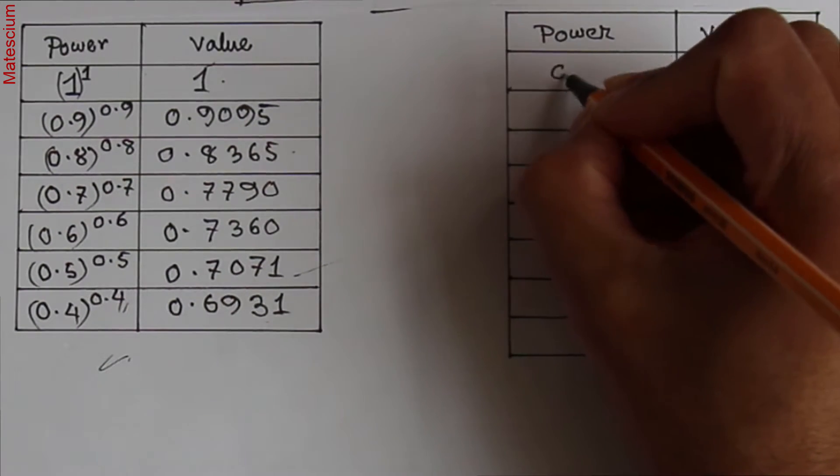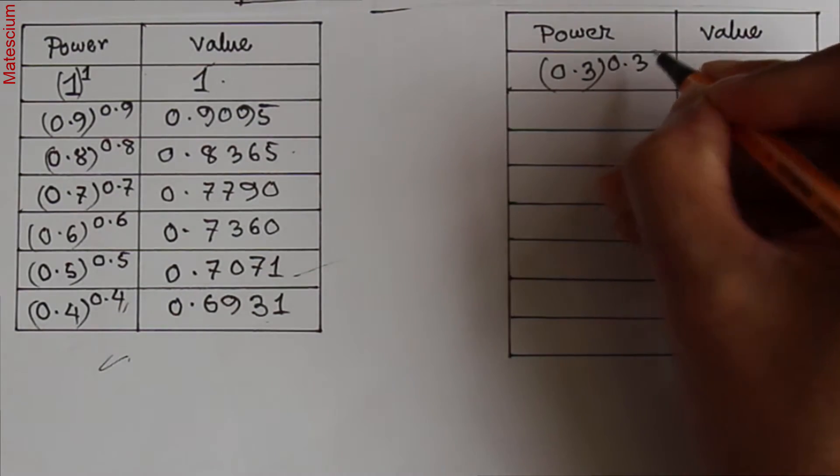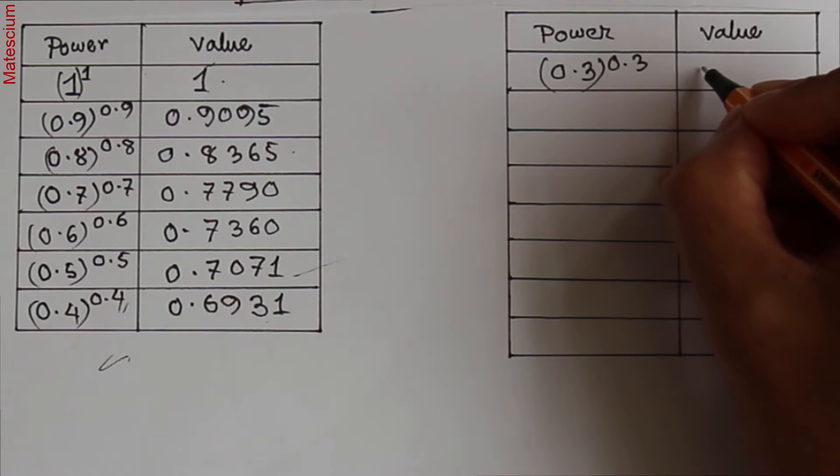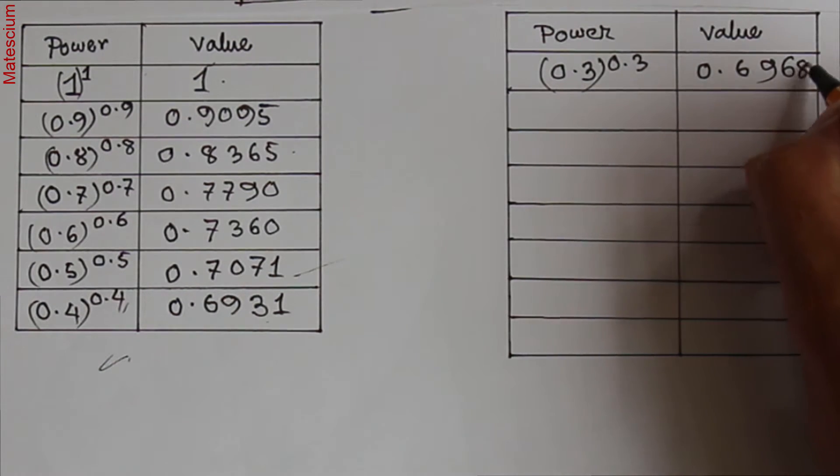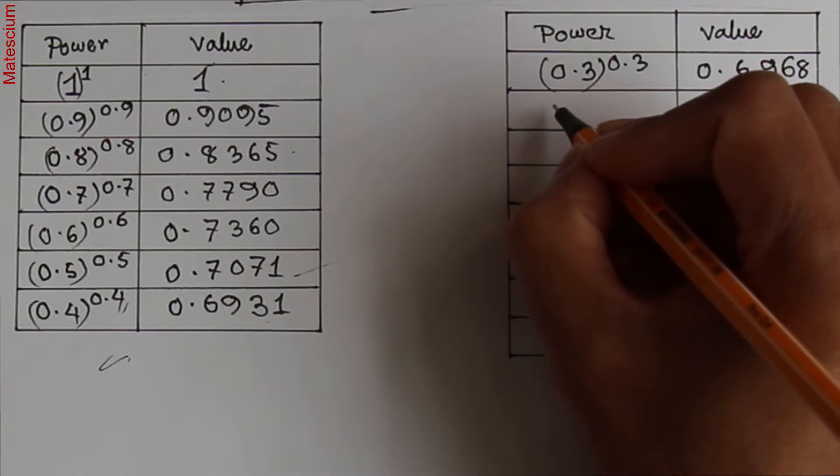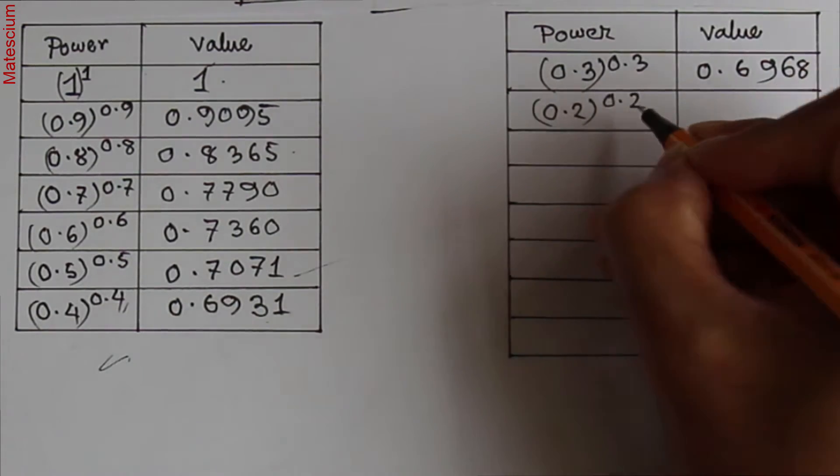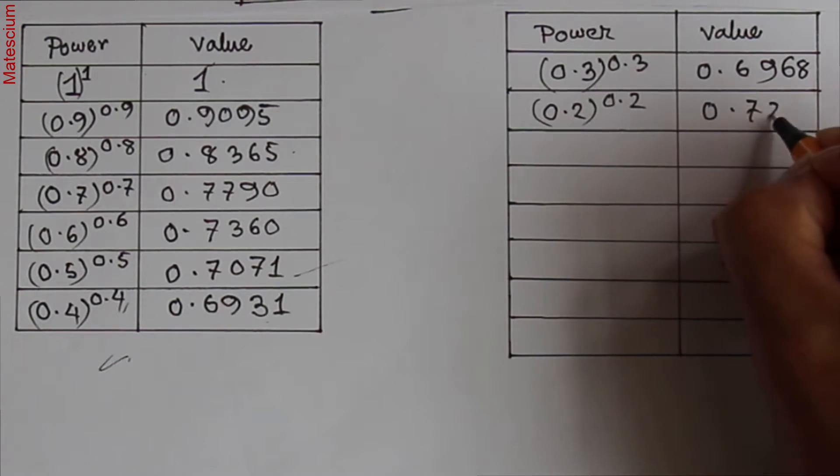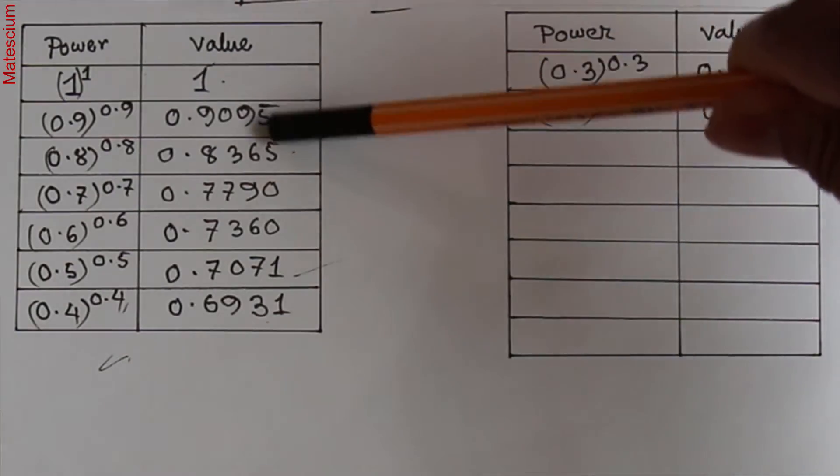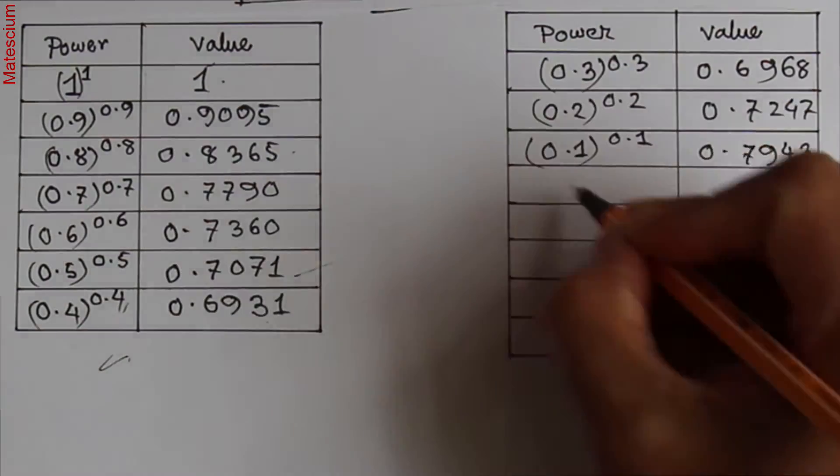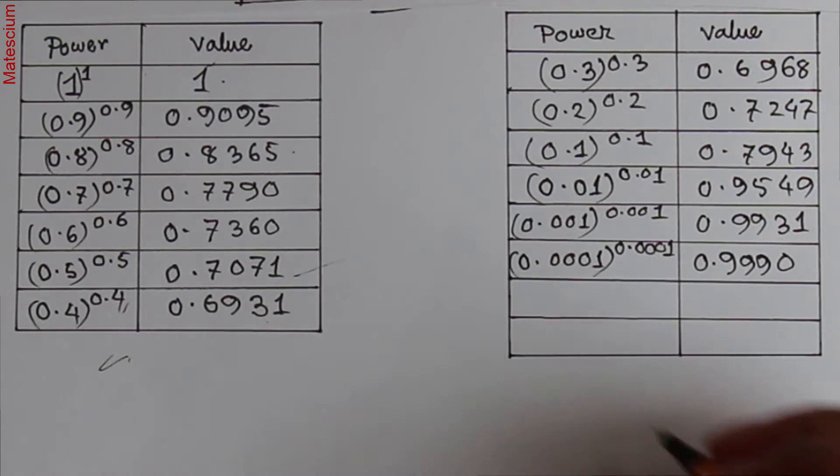Let's say 0.3 to the power 0.3. If you use your calculator, it will be 0.6968 and some other numbers as well. Similarly, 0.2 to the power 0.2 will be 0.7247. Now here, this value is reducing until here, and then again it's increasing. Interestingly, I am going one more further step.